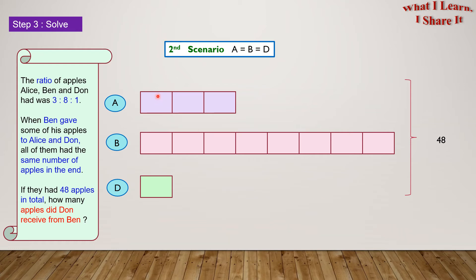We also have a second scenario in which A, B, and D all become equal. But this happens when Ben gives some apples to Alice and Don. Let's reorganize these boxes to make them equal. And finally, see, now they're all equal.